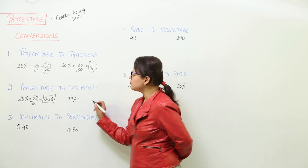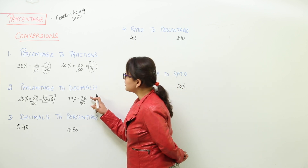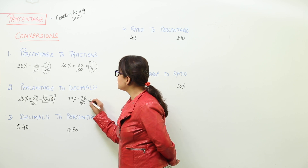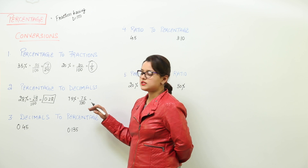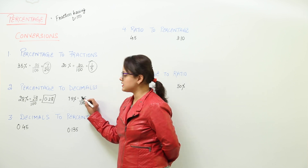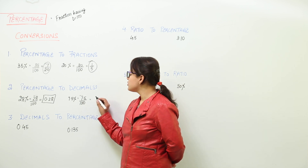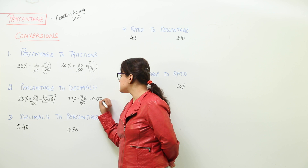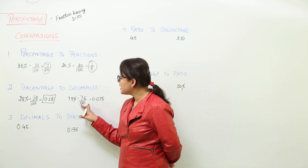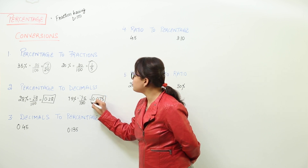For the next example, we get rid of the percentage sign and write 7.5 over 100. This is a decimal fraction because it has a denominator in the powers of 10. We count the number of zeros and start counting from the rightmost part of the numerator. But here the numerator is a decimal itself, so we start counting from the decimal place — the digit before the decimal place is 7. There are two zeros, so we take two decimal places and write 0.075. That is the decimal for 7.5 percent.